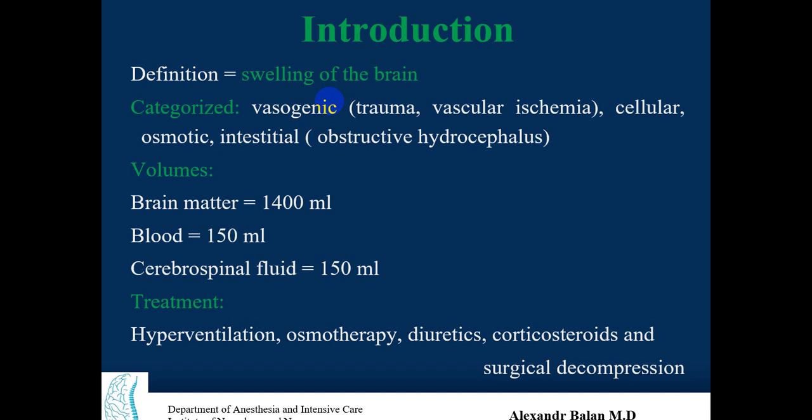The three main cranial components inside the skull are brain matter, blood, and cerebrospinal fluid. Their relative volumes are: brain matter approximately 1400 milliliters, circulating blood volume 150 milliliters, and cerebrospinal fluid 150 milliliters. CSF renews throughout the day, achieving a total volume of roughly 480 to 500 milliliters over 24 hours through absorption and internal circulation.